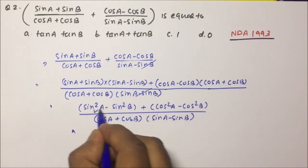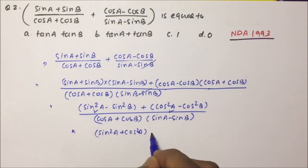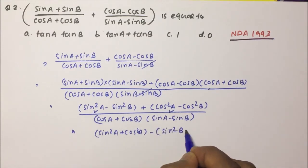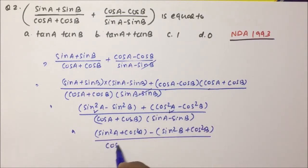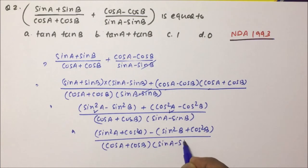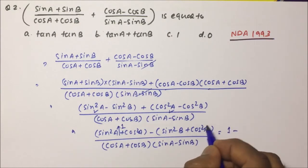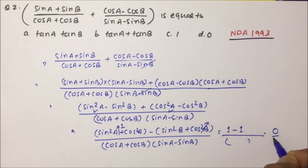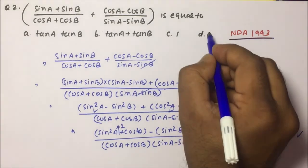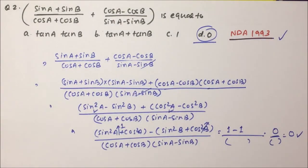We can club sin²A + cos²A together and also sin²B + cos²B together. Taking the minus sign common, the numerator becomes (sin²A + cos²A) − (sin²B + cos²B), which equals 1 − 1 = 0. So the whole expression equals 0, and the answer for question number 2 is option D, which was asked in the NDA exam 1993.